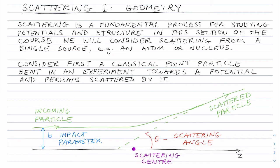We'll start by considering a classical point particle, which is in an experiment where we send it towards some scattering potential, which is what we want to know more about, and perhaps that particle gets scattered.